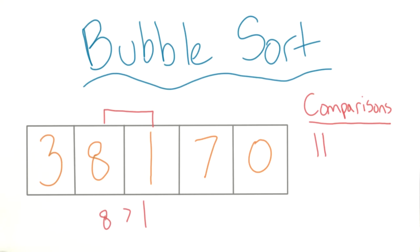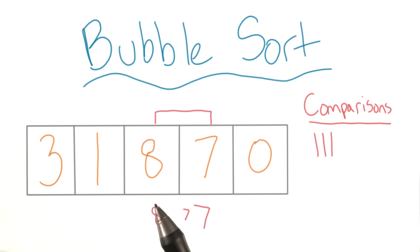Looks like we need a switch here as well. Now we can move along to the next two elements. And again, looks like our first element is bigger than our second one, so we'll need to switch.